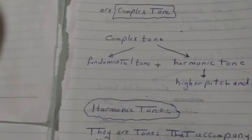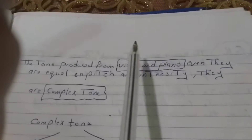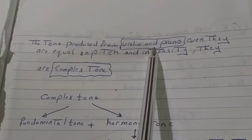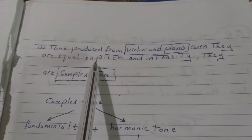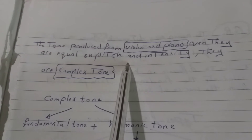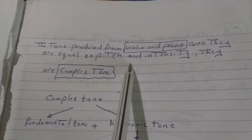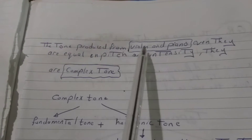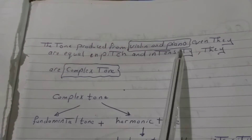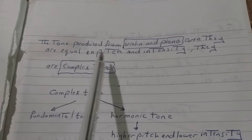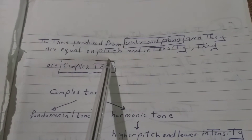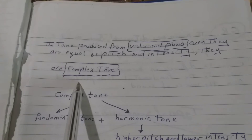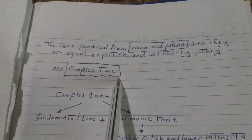What about the sound produced from musical instruments like violin and piano? They are not fundamental tunes — they are called complex tunes. The tune produced from violin or piano, even when they are equal in pitch and intensity, is also called a complex tune.